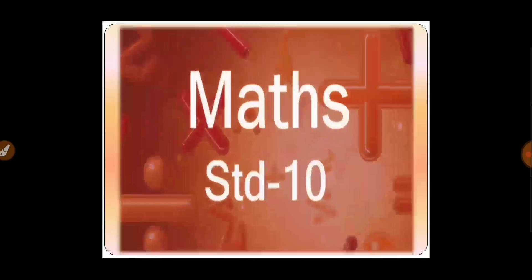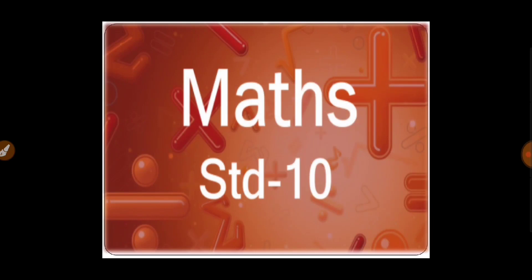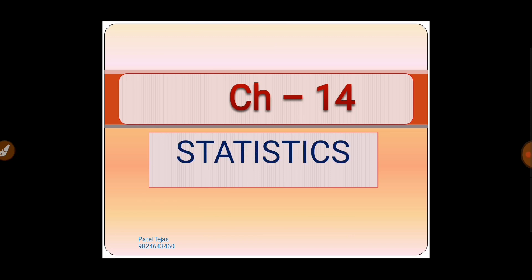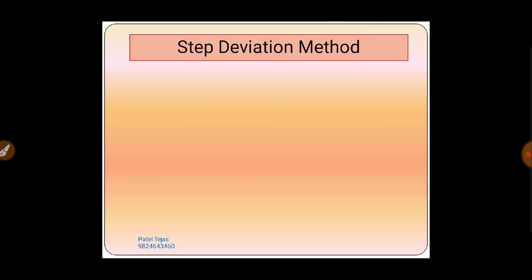Hello friends, how are you? Today we have to study Chapter 14, which is Statistics. In the previous video lecture, we studied the step deviation method. The formula of the step deviation method is x̄ = a + (Σfi·ui / Σfi) × h.